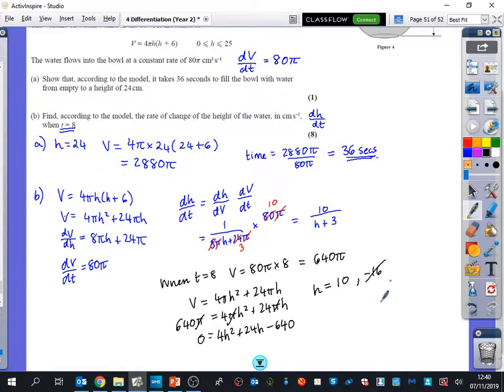Taking back in here, I can then say that dh/dt is 10 over 10 plus 3, which is 10 over 13, or 0.77 centimeters per second.